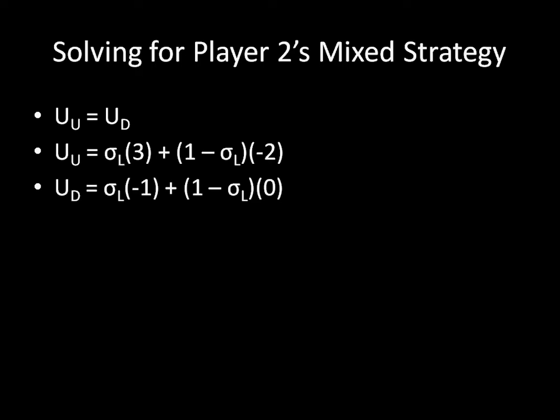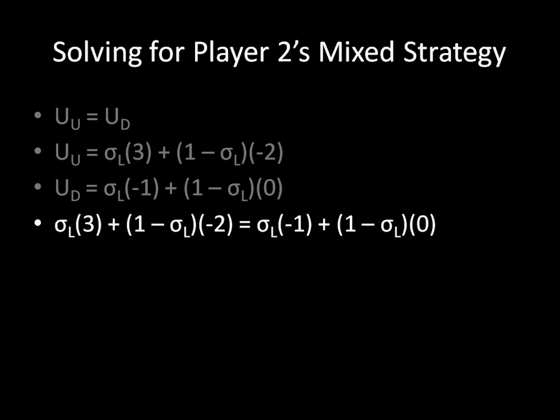Now all we have to do is use those three equations to solve for sigma. So this is the first step, just copying what we had before. And then we eliminate the u's to get an equality with just sigma. So the left side of that equality comes from the second bullet point, the right side comes from the third bullet point. And we can do this because the first bullet point gives us that u of u equals u of d. Then some distributing and rearranging gives us that. And eventually we reach three sigma equals one.